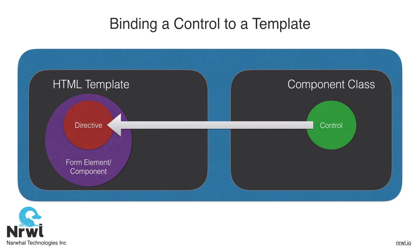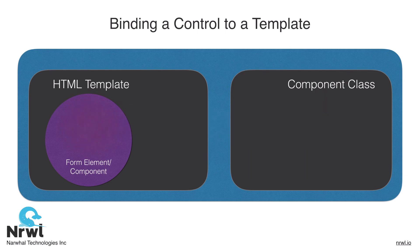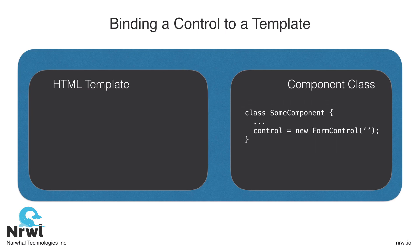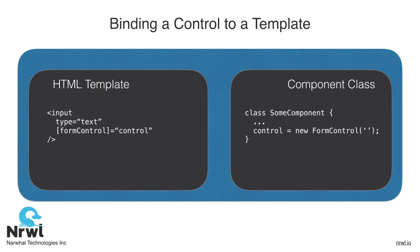Let's tie this all together with our mental model and look at some actual code. Here we declare a new form control for our component class, and we see a form element which we wish to bind to this control. We add the directive to the target element and they are now properly bound. This means we can call methods within our component class and our DOM will accurately reflect those changes. Let's jump into our next lesson so we can see all of this in action.